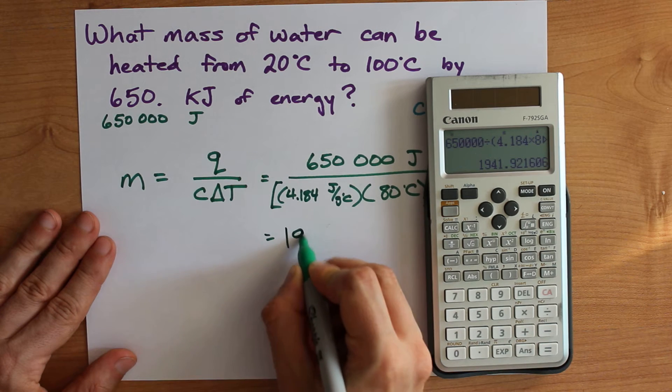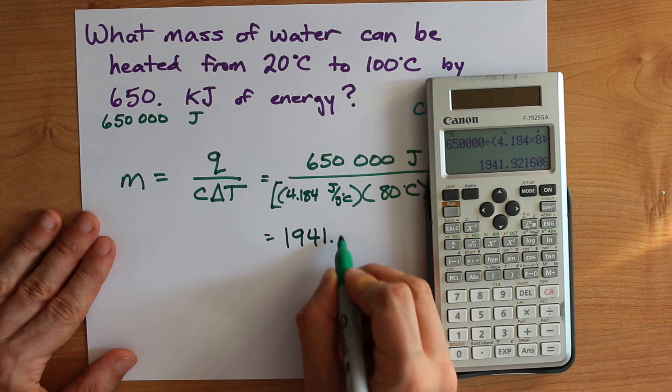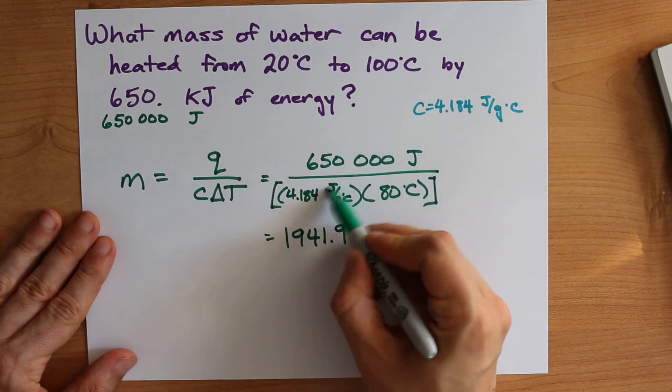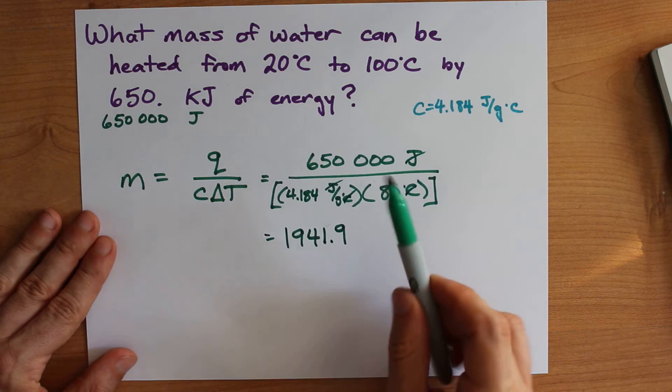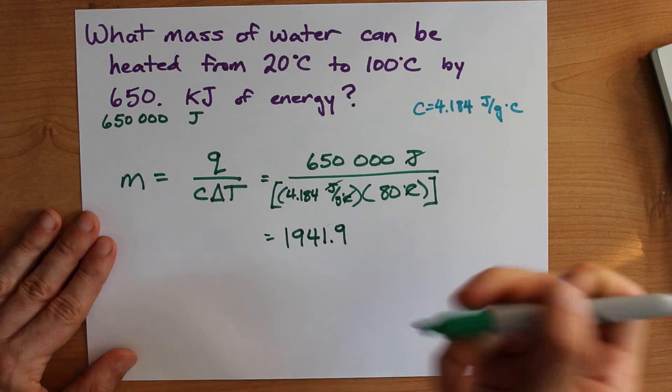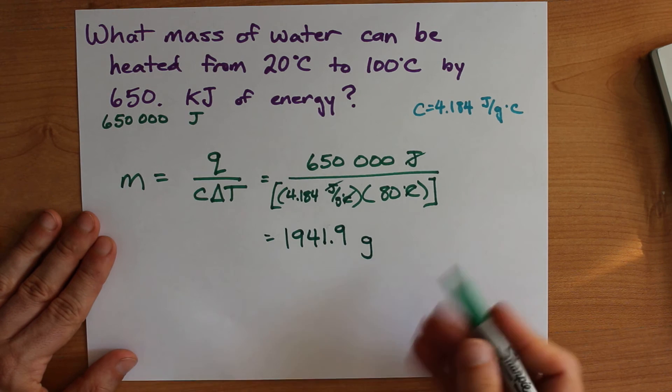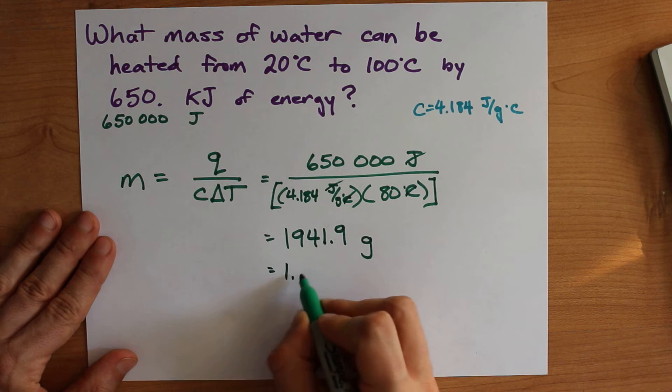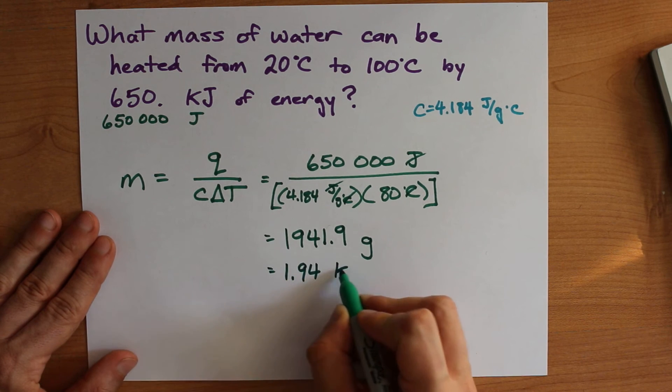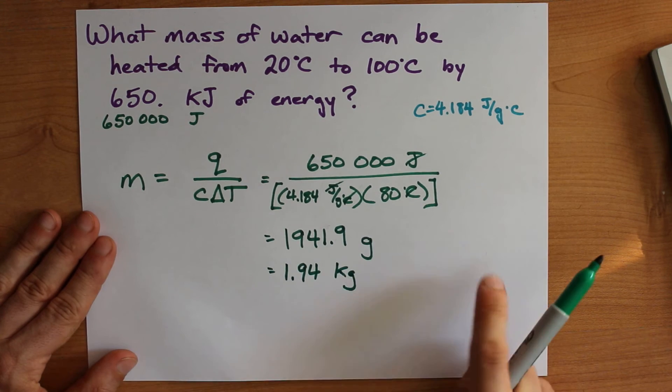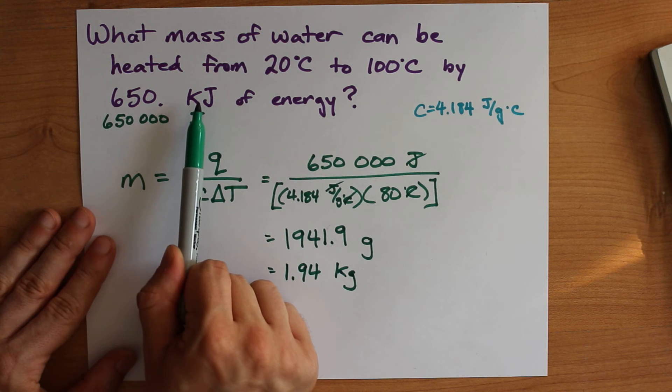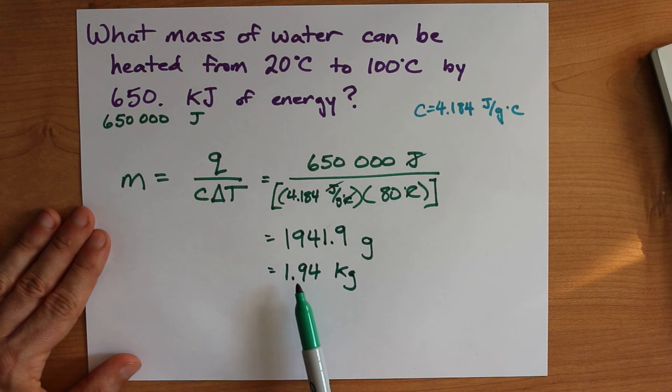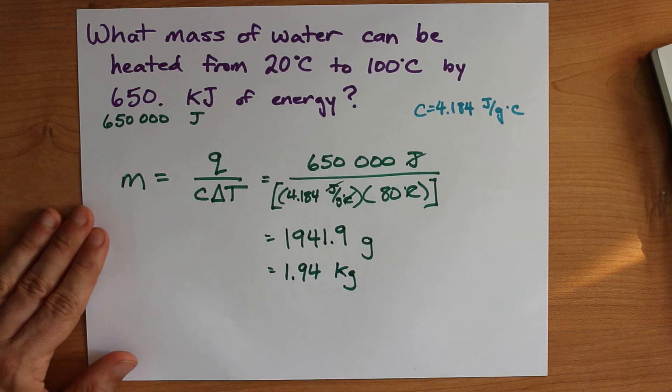The answer here is 1941.9. Now my joules cancels with my joules, my degrees celsius cancels with my degrees celsius, and because I'm dividing by per grams, this ends up being regular grams. Now I can convert that to kilograms if I divide by a thousand. Can you tell you'll be doing that a lot in these types of questions? Apparently adding 650 kilojoules of heat can heat up 1.94 kilograms of water by 80 degrees celsius.